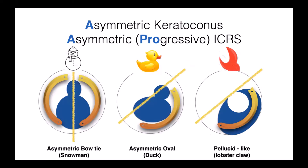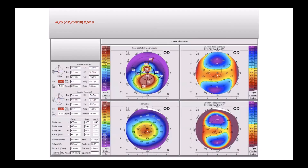For asymmetric keratoconus, we have to use the asymmetric progressive intracorneal ring. The first form is the asymmetric bowtie or snowman, the asymmetric oval or duck, or the pellucid-like form which we can call the lobster claw. Here is an example of a snowman form with minus 12.75 astigmatism treated with two asymmetric intracorneal ring segments.